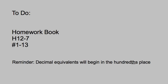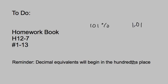For homework, we're working out of the homework book, H12-7, problems 1 through 13. Numbers 12 and 13 take careful reading, so take your time. Remember, the decimal equivalents end in the hundredths place — for example, 101 percent has a last digit of 1 in the hundredths place, making the decimal 1.01. That's the only tricky part of this lesson. Good luck.